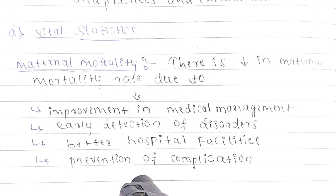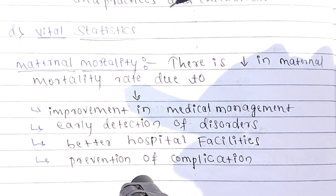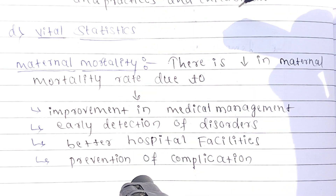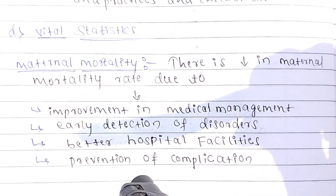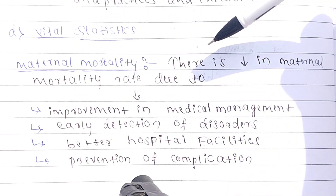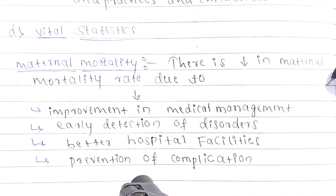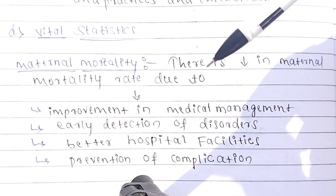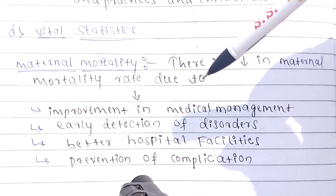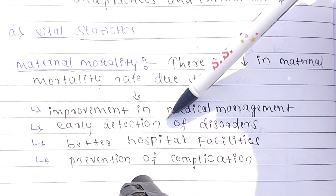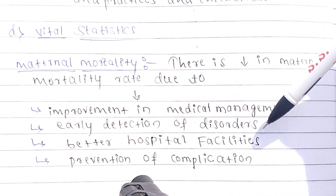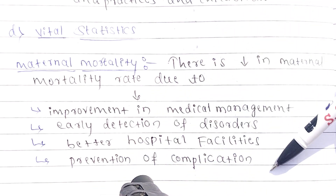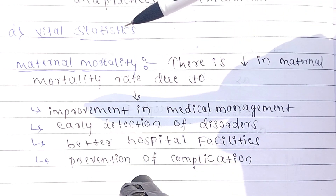The next point is vital statistics. There is a decrease in maternal mortality rate due to improvements in medical management, early detection of disorders, better hospital facilities, and prevention of complications. Early detection through technology helps prevent mother mortality and collapse.